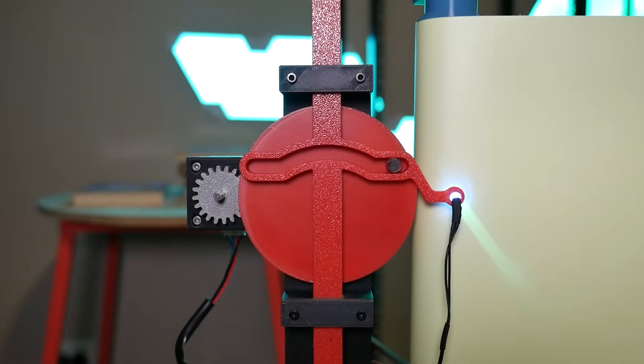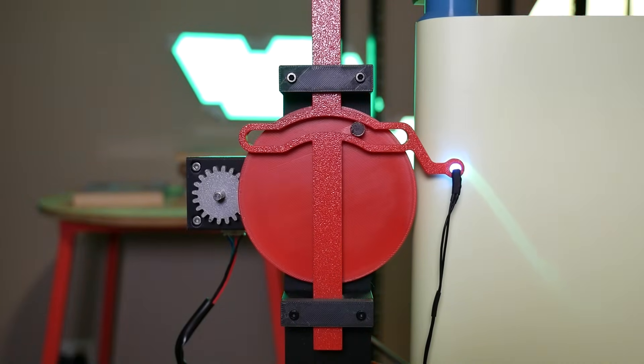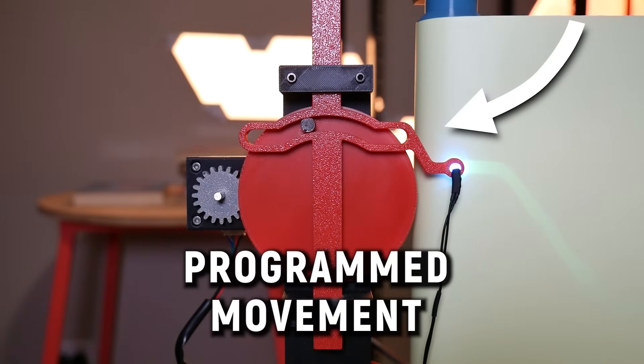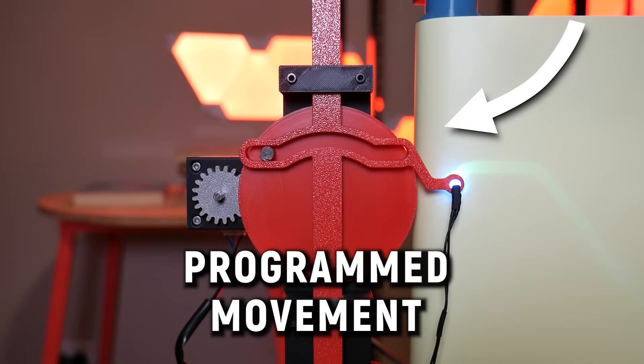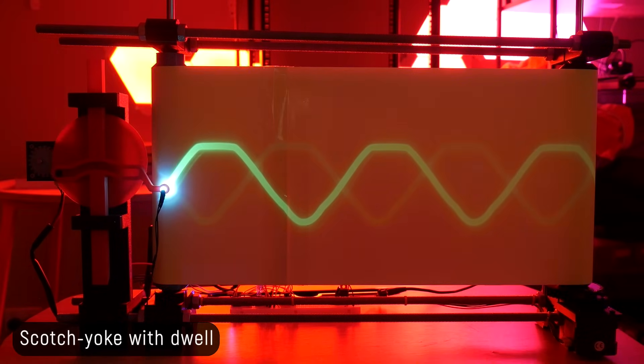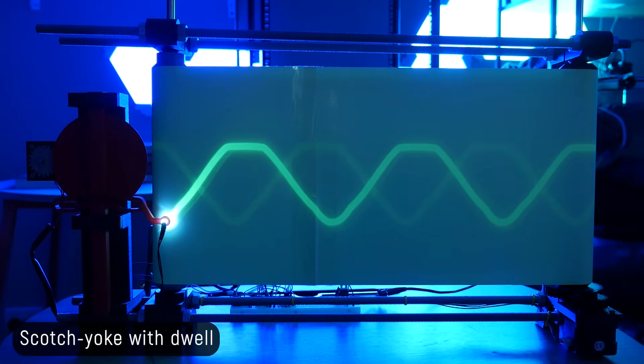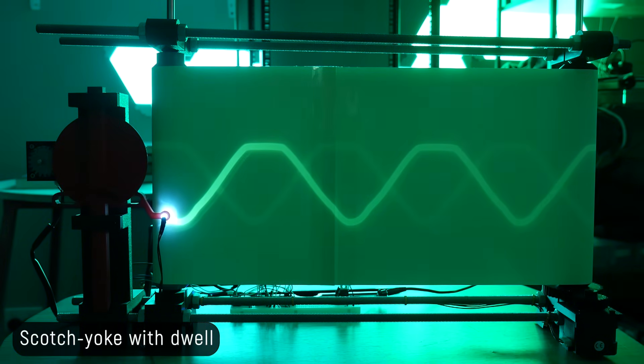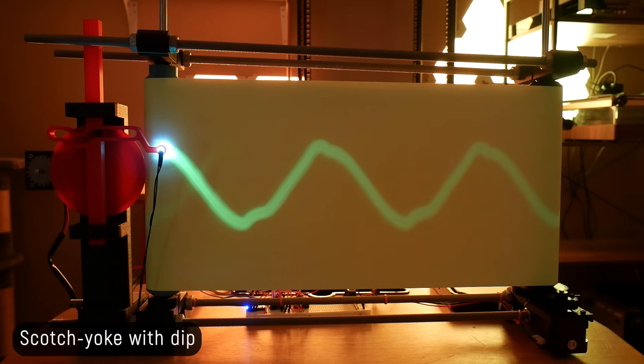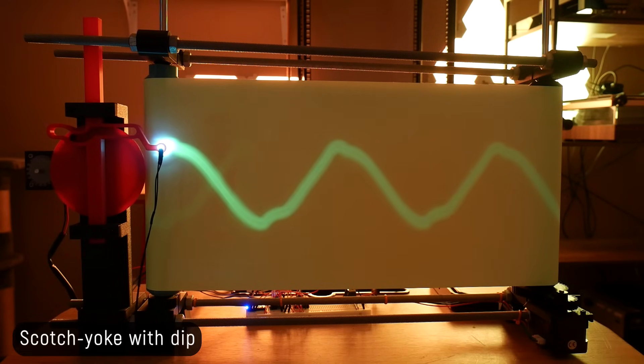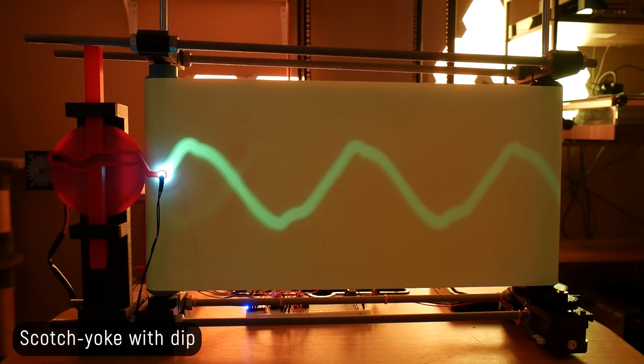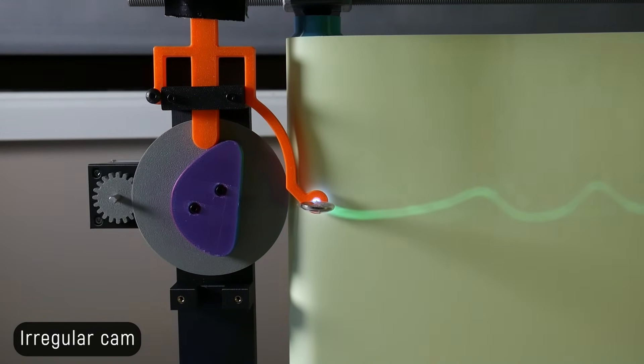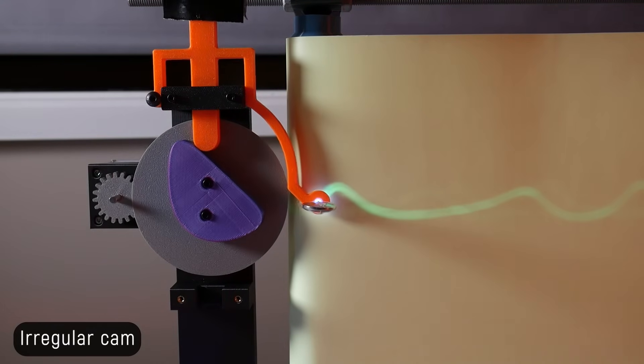And there's another neat trick the scotch yoke can do that a crank can't. It can be programmed. By changing the slot to another shape, you can drastically change the output, adding dwells, rapid direction changes, and more, simply through slight geometric changes. You can get quite creative with the curves and the outputs it creates, but it's not going to be as freeform as something like a cam, which really is the king of mechanical programmed movement.